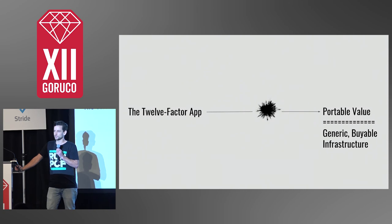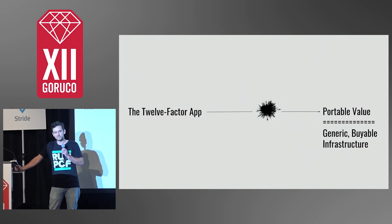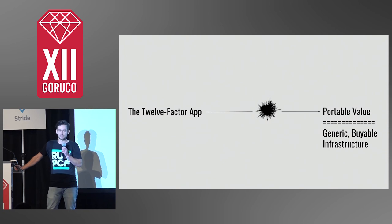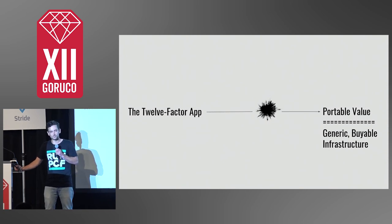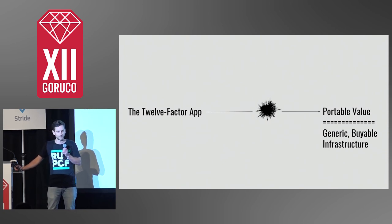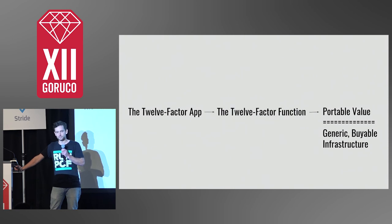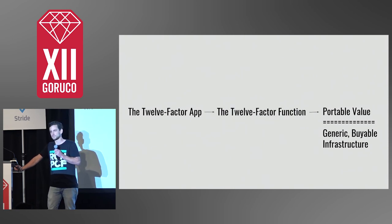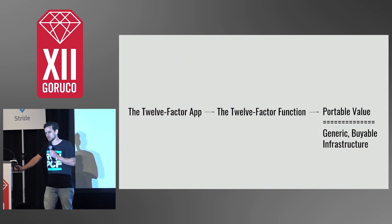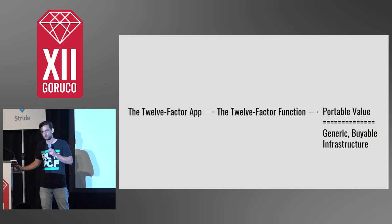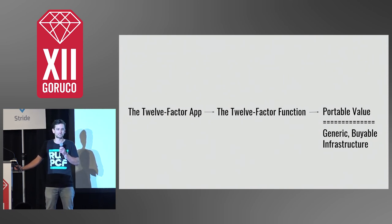Infrastructure is a fuzzy word. What if we say infrastructure is everything that isn't the rules of your business? Now suddenly it looks like we drew the lines wrong. The 12-factor function goes to the logical extreme — it says these functions should be 100% business rules, so our business value is more portable and the rest of the stack is more generic.